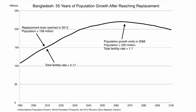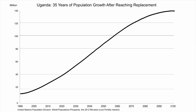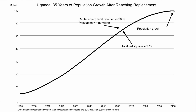It's a little different in Uganda. The UN assumes Uganda will not reach replacement until the year 2065, when it has 115 million people. It would stop growing in 35 years — a little quicker than Bangladesh — coming to an end right at the end of this century at about 139 to 140 million. So we have two different kinds of momentum there.